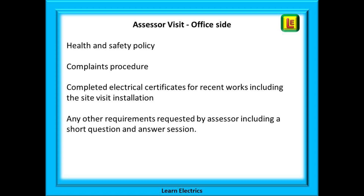Most importantly, the assessor will want to see recent electrical certificates — especially the certificates for the job you are going to take them to. The certificates must be fully completed before your assessor arrives; you will not have the opportunity to complete them during the assessment. Falling down at this stage means you may not even get as far as a site visit. There will also be a few questions on the Wiring Regulations and Part P — your answers are recorded and there is a pass or fail element. It is open book, testing your ability to use the books.